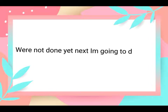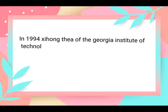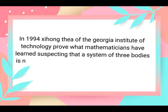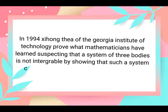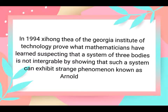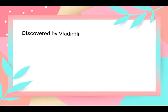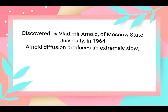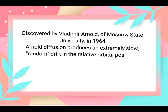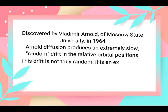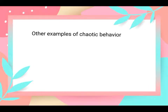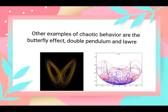Next, I'm going to discuss what Arnold diffusion is. In 1994, Zhihong Xia of the Georgia Institute of Technology proved what mathematicians had long been suspecting — that a system of three bodies is not integrable, by showing that such a system can exhibit a strange phenomenon known as Arnold diffusion. Discovered by Vladimir Arnold of Moscow State University in 1964, Arnold diffusion produces an extremely slow random drift in the relative orbital positions. The drift is not truly random; it is an example of the type of behavior now known as chaos. Other examples of chaotic behavior are the butterfly effect, the double pendulum, and the Lorenz system.